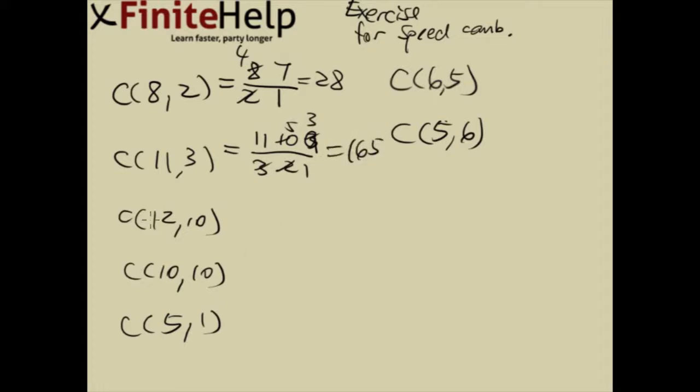12 choose 10, the difference is 2. 2 is much better to use than 10, so we can go twice on top, starting with 12, so 12 times 11 over 2. That's 66.